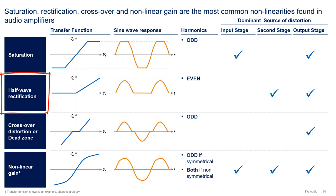In its pure form, half-wave rectification only produces even harmonics. Third, we have crossover distortion, or dead zone. This distortion relates to discontinuities at the zero crossing of an input signal, where the gain of the block drops. This distortion is typically found in class AB output stages, where the transition from the P to the N device, and vice versa, has a discontinuity. In its pure form, it produces only odd harmonics.